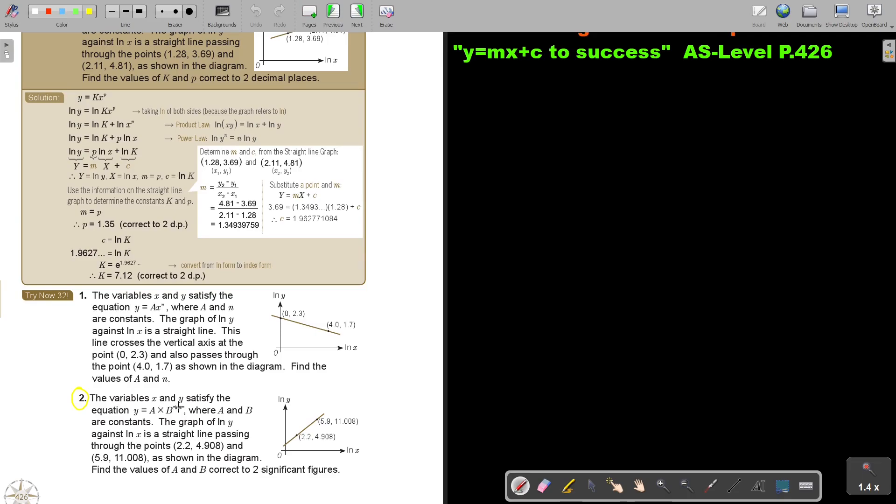The variables x and y satisfy the equation y equals a multiplied b to the power ln x where a and b are constants. The graph of ln y against ln x is a straight line passing through the two points as shown in the diagram. Find the values of a and b correct to two significant figures. Always underline that. Now, let's start. This is number two.